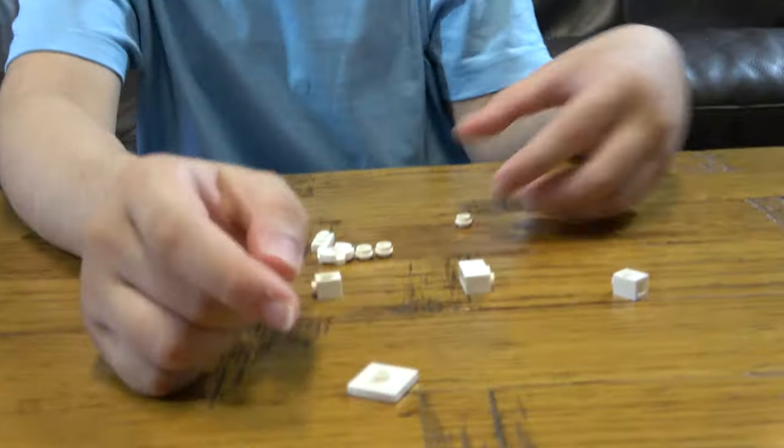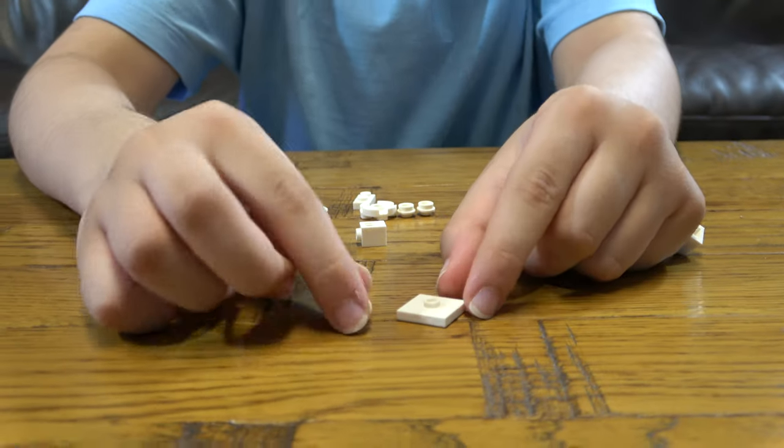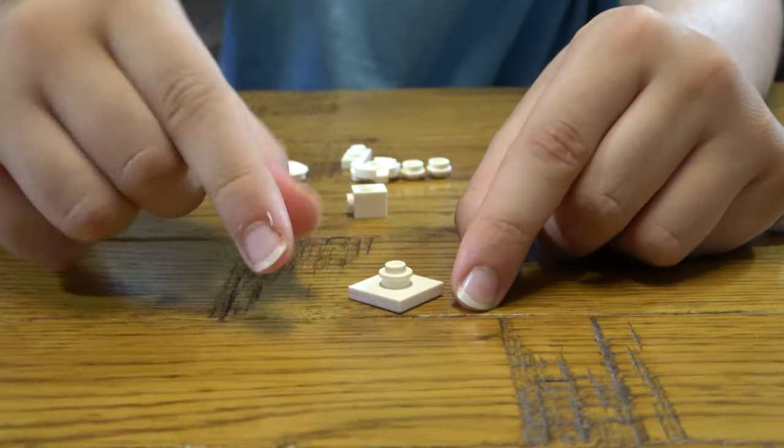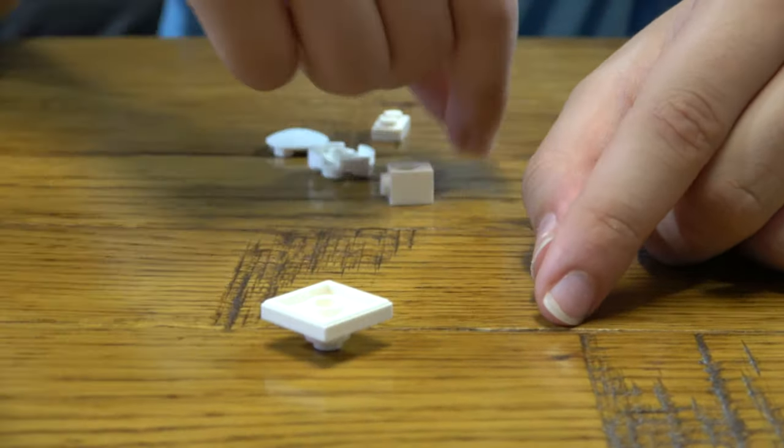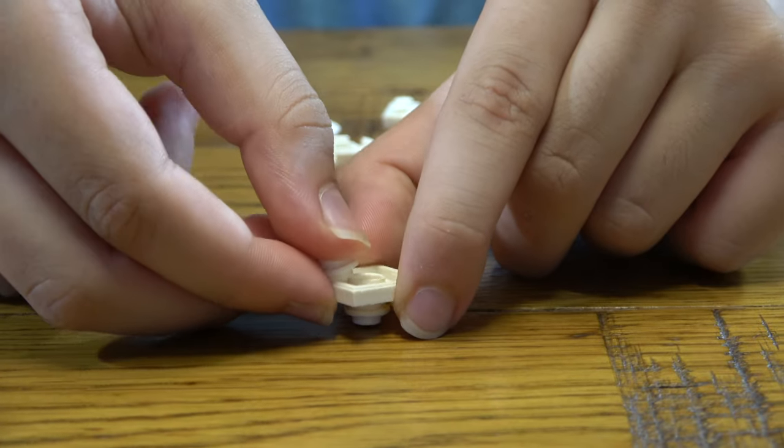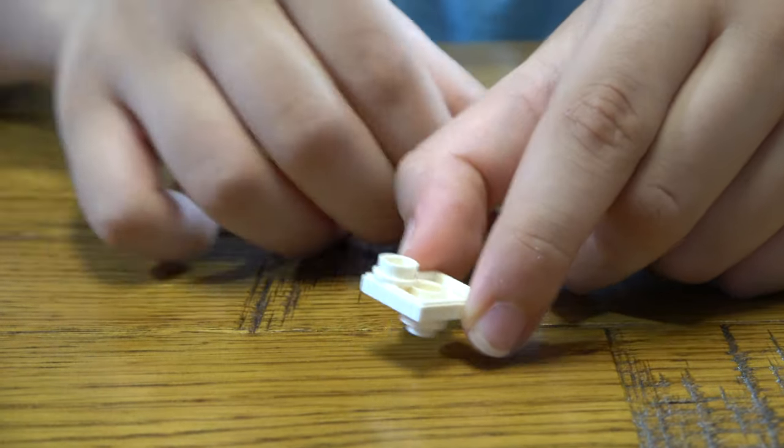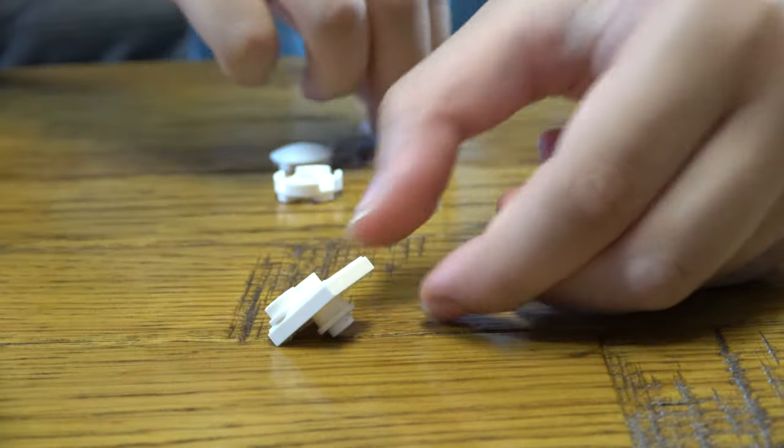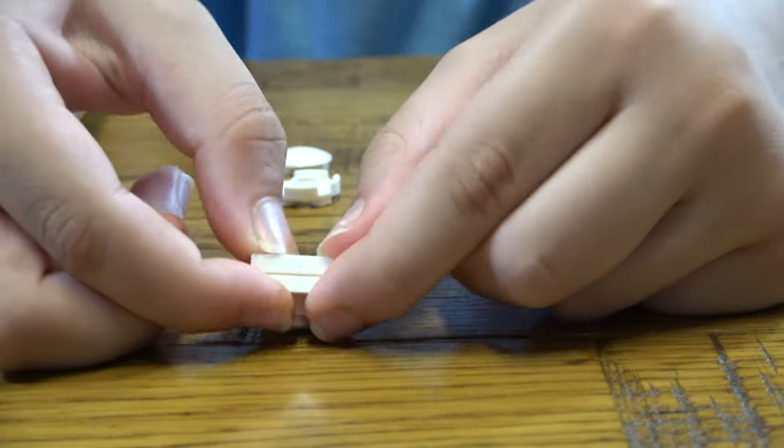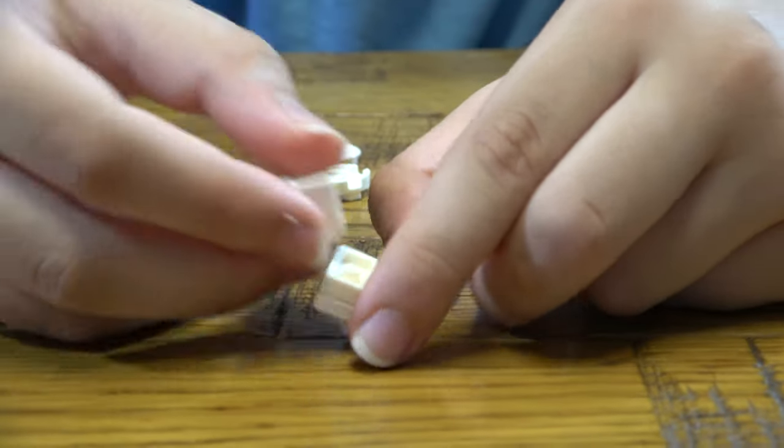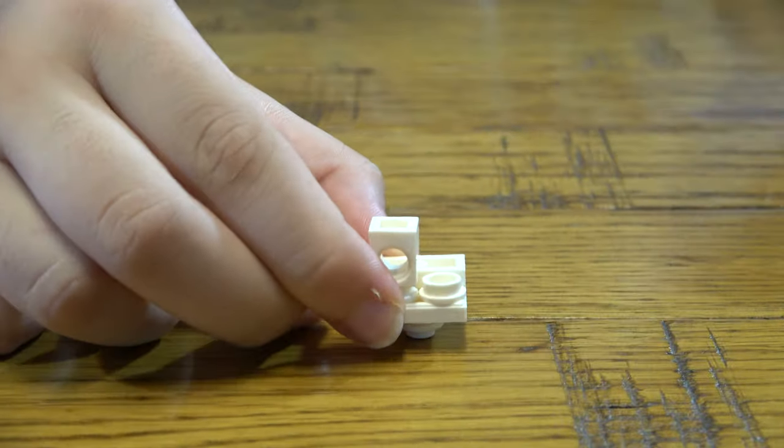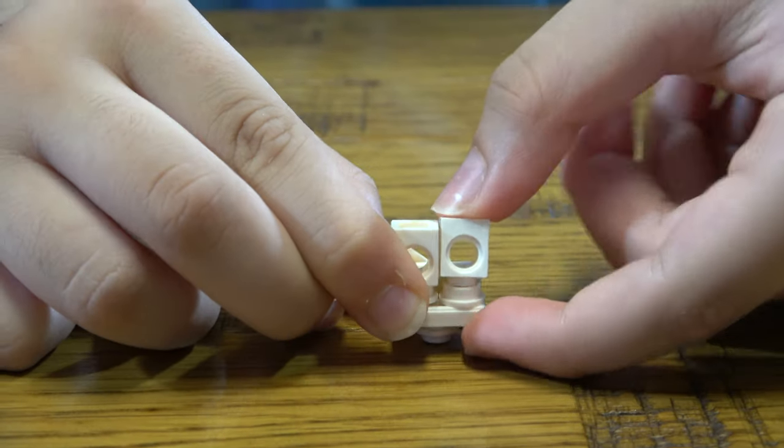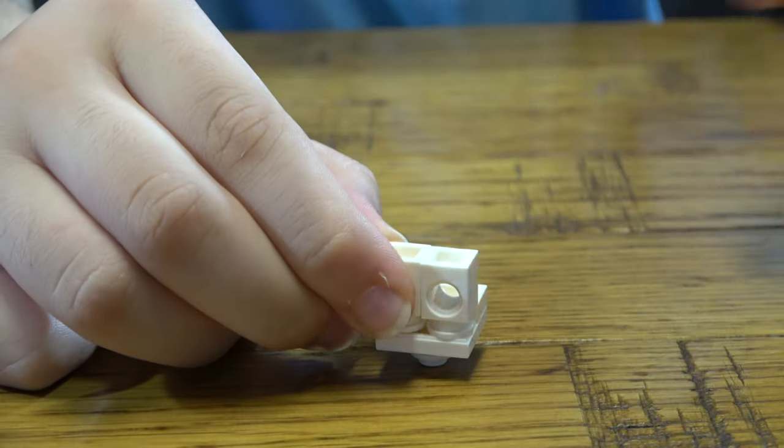The first thing we need to get is this and this, put this on top like that, we turn it around. We place two of these here, then we get this and place two of these here like that.